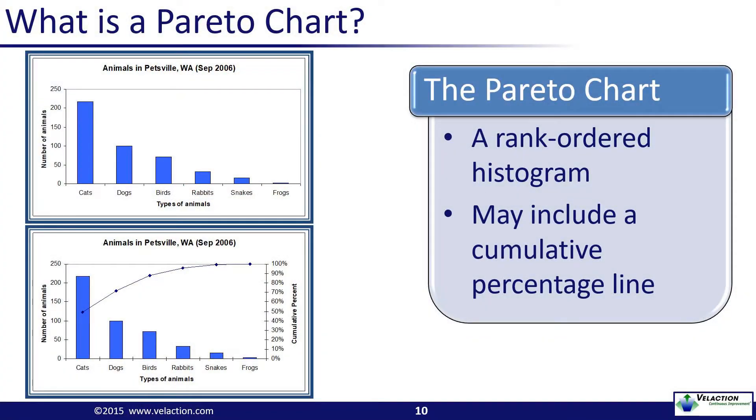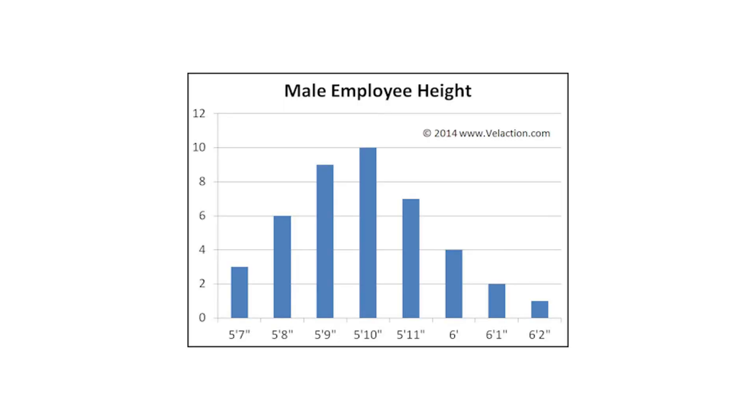A Pareto chart takes advantage of the 80-20 rule to visually show the categories with the largest impact on a problem. A scatter diagram shows the relationship between two factors; the visual nature of the chart makes patterns jump out. A histogram is a type of bar chart that shows data in equal buckets, letting the user see the distribution of the data.